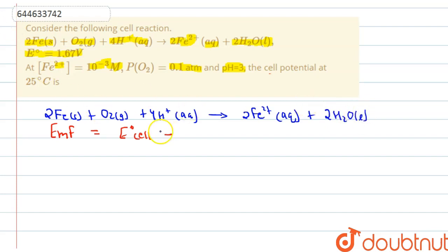Now what we have to do is minus 0.059 divided by N. N is the number of electrons which are taking place in this reaction multiply by log and in this log there will be the concentration of these products here. So Fe2+ to the whole square because the stoichiometric coefficient is 2 here and the concentration of H2O is 1 here.